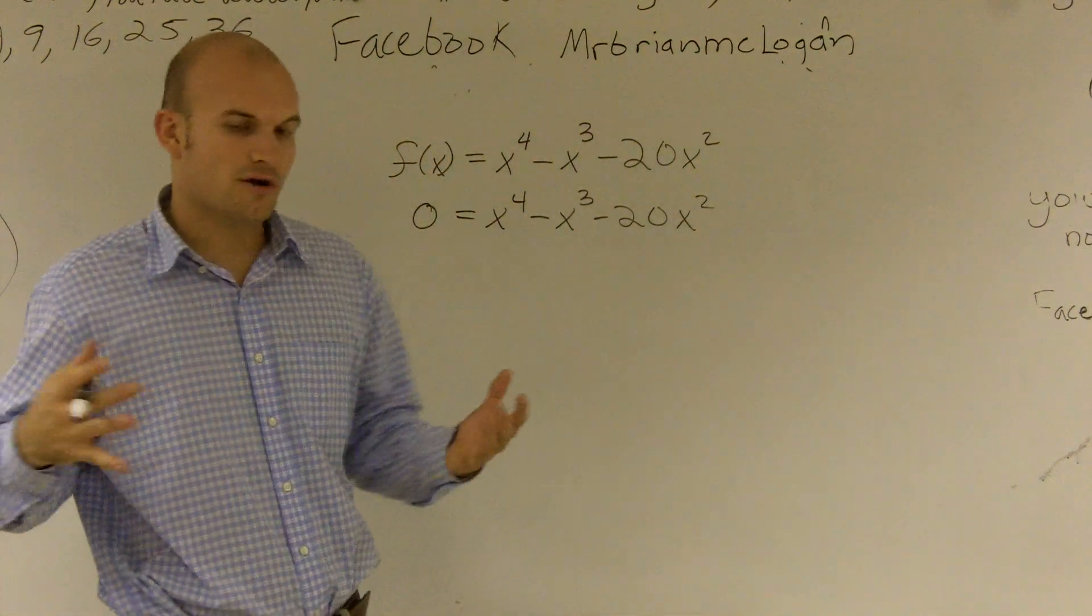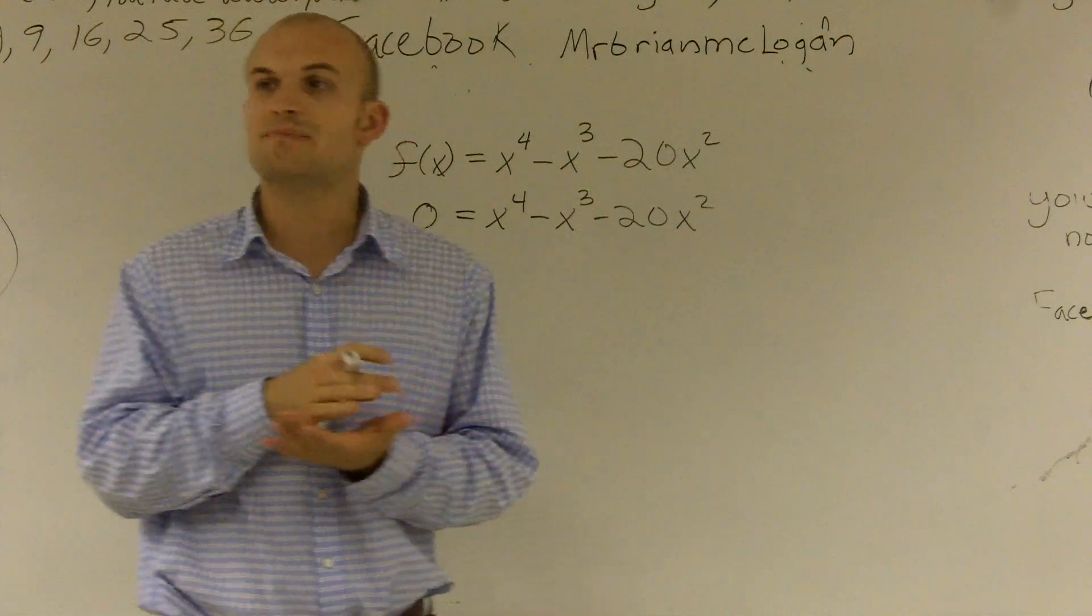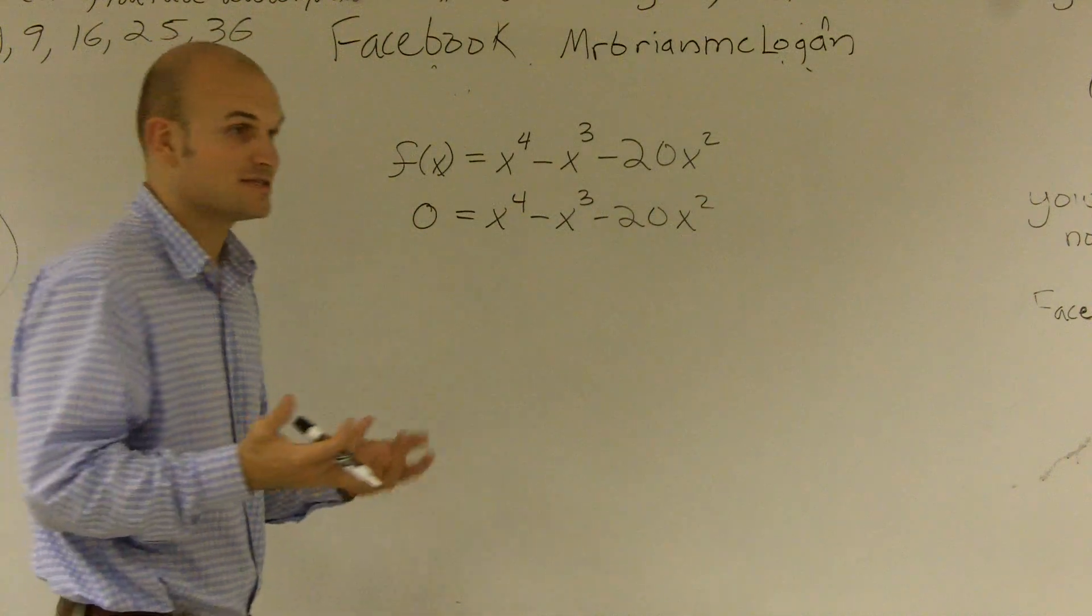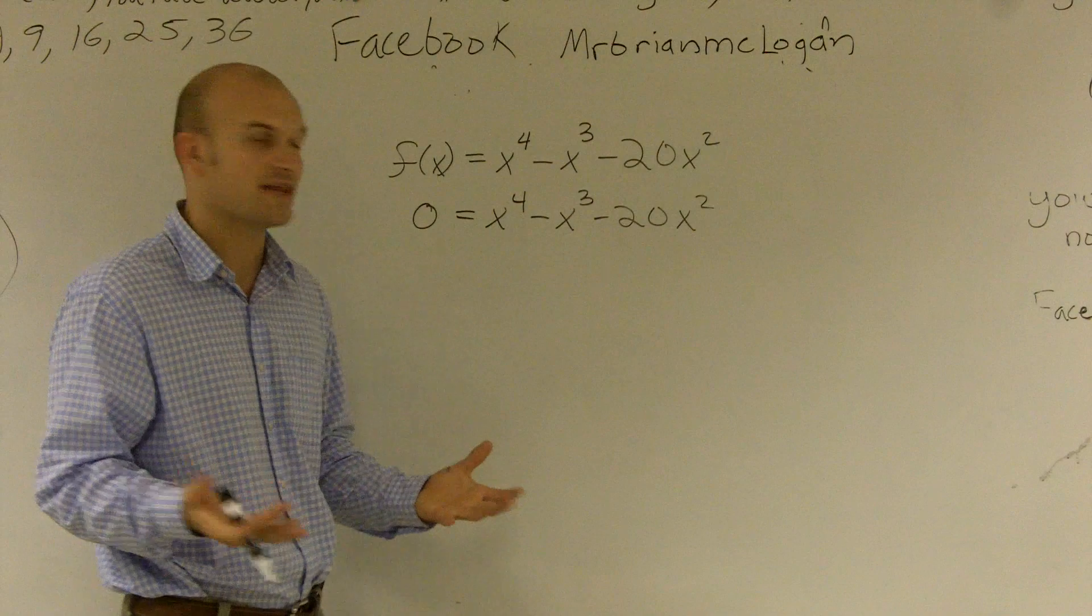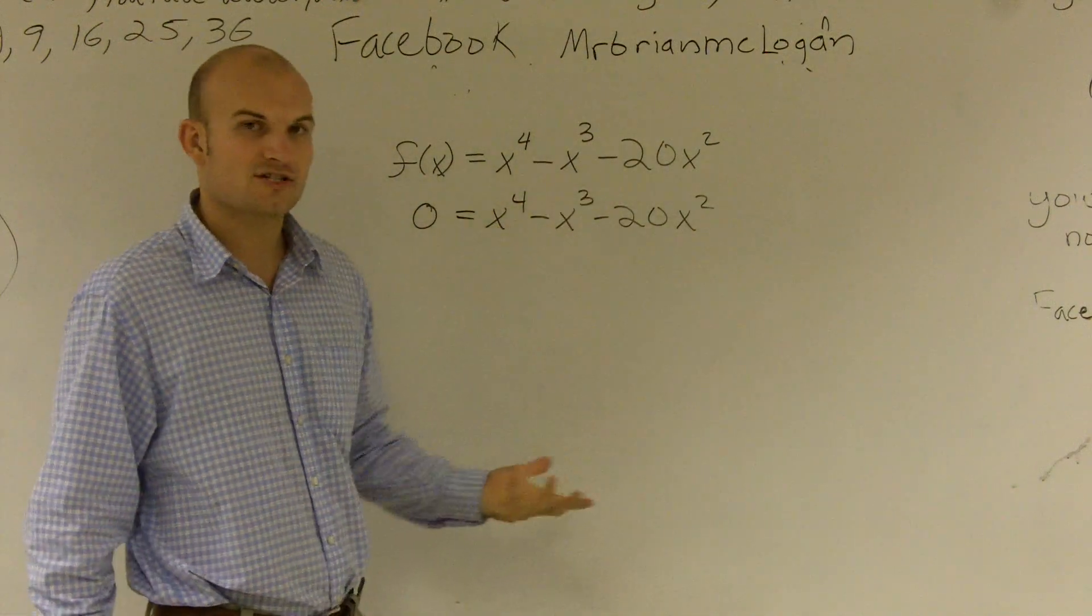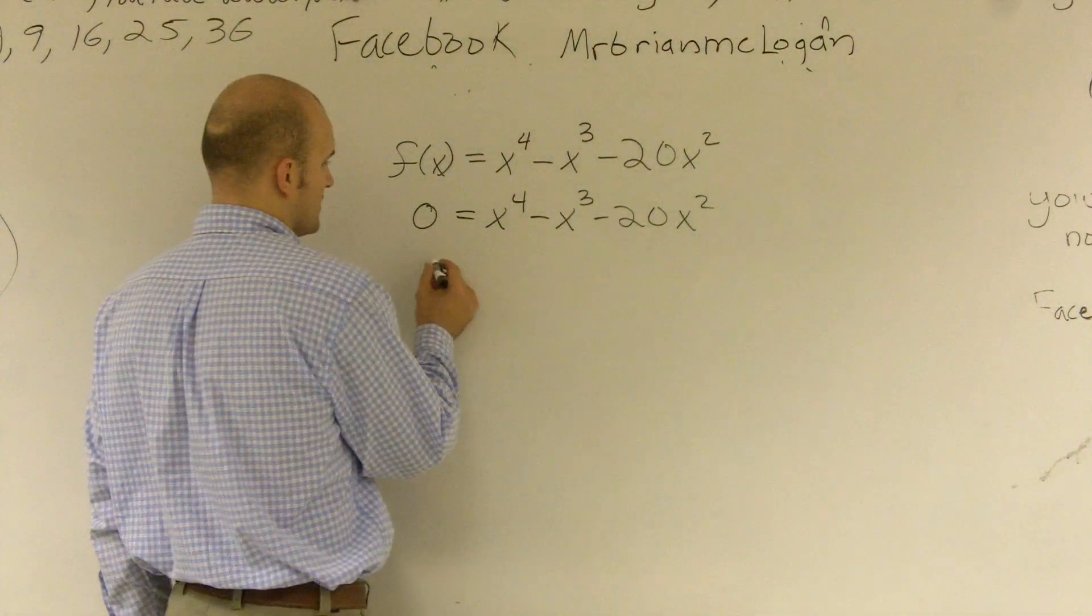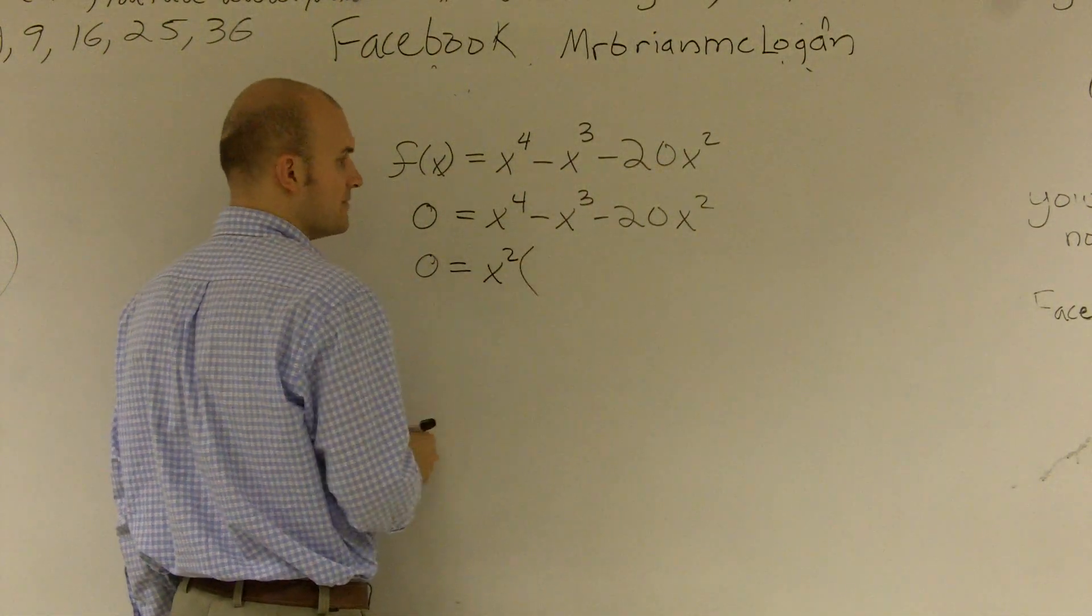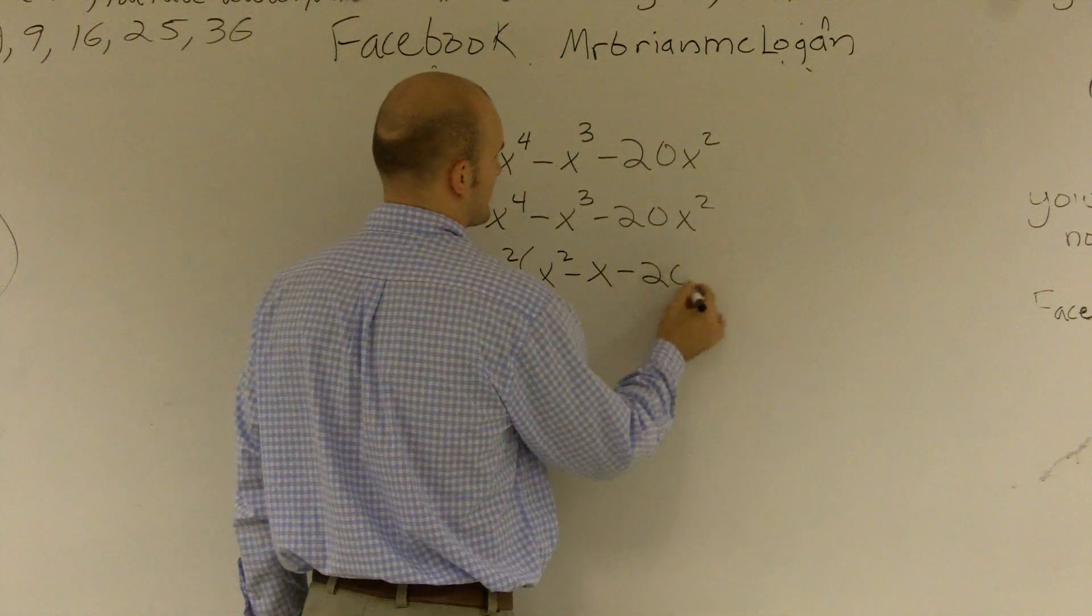So the first thing you always want to do, whenever you're solving something or factoring, you always want to look to how can you simplify it. One way of simplifying is factoring out something that's common. I look here, and I notice that they all share an x squared. I can factor out an x squared. So I can get 0 equals x squared times x squared minus x minus 20.